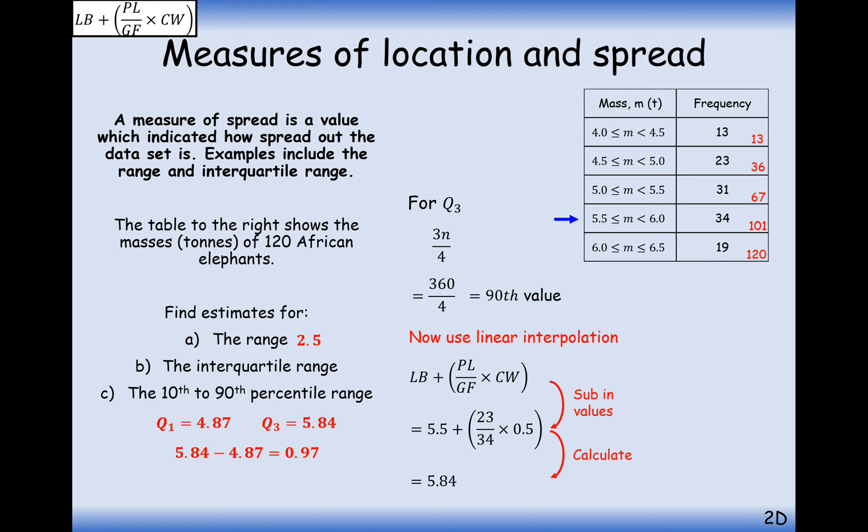And the last thing for us to do is just do one subtracted by the other, so we get 0.97. It will be in tonnes as the interquartile range there.